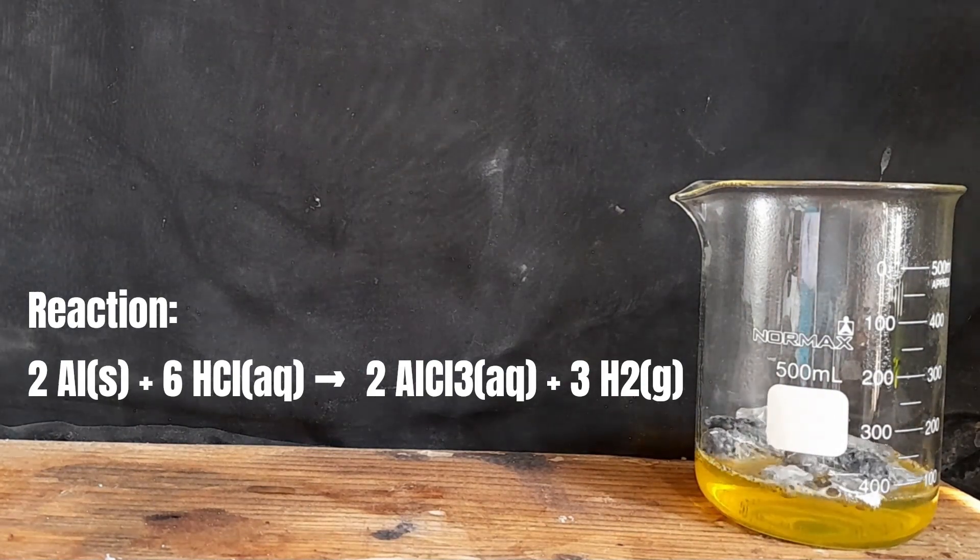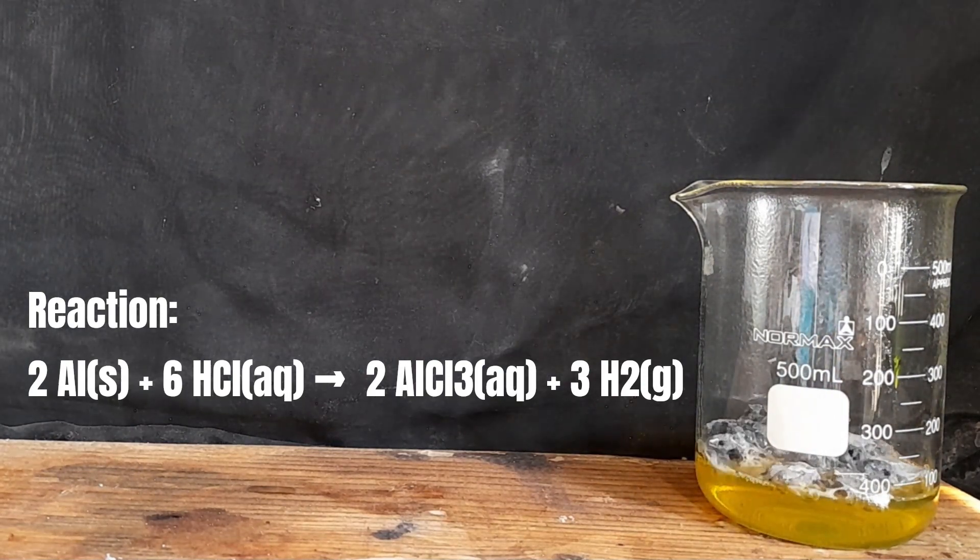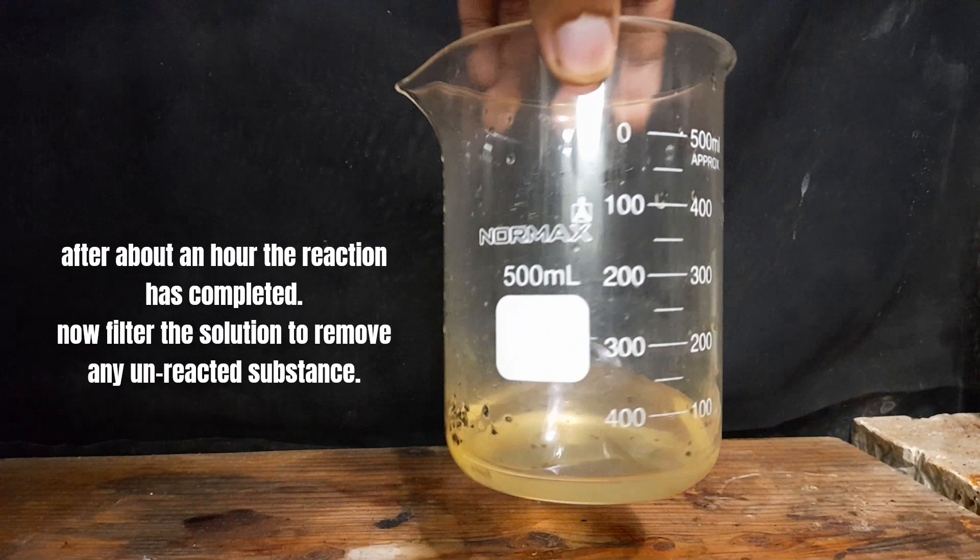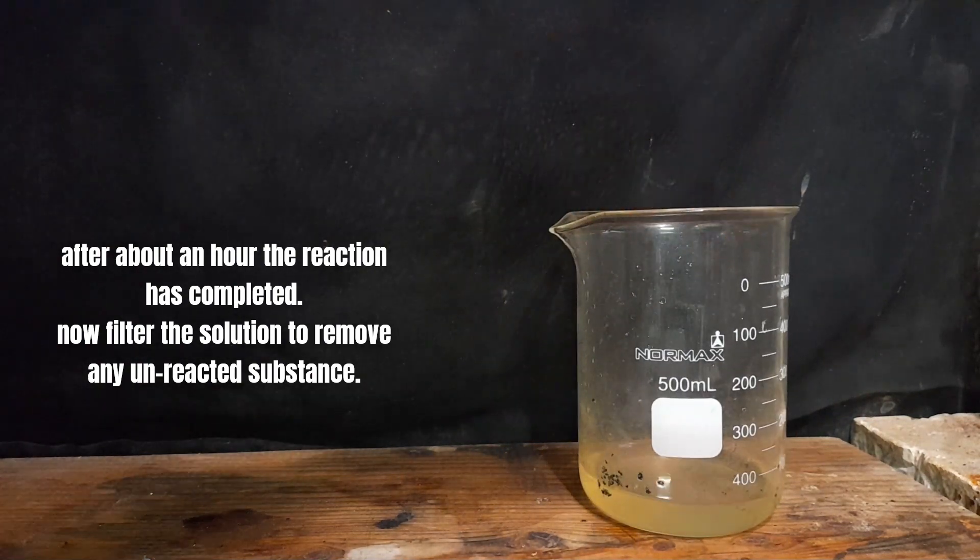Aluminium react with hydrochloric acid and synthesis hydrogen gas and aluminum chloride. After about an hour the reaction has completed. Now filter the solution to remove any unreacted substance.